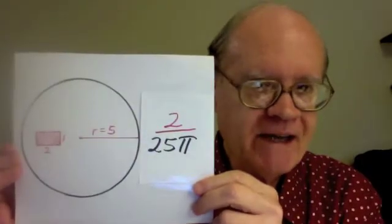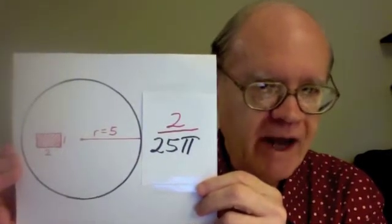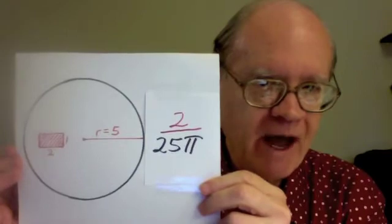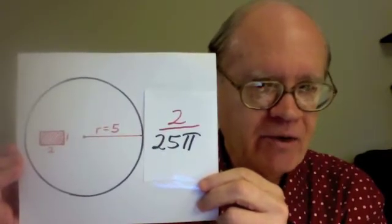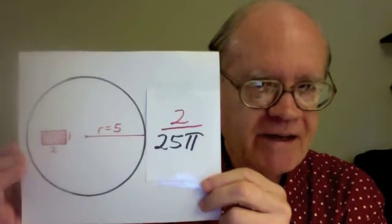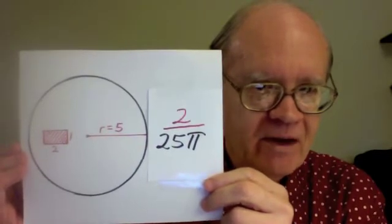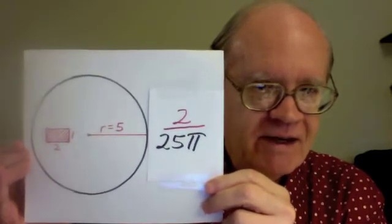And so our probability answer is 2 over 25 pi. That is the exact answer. We could get a decimal approximation from a calculator, but I'm not interested in that in this challenge. What I want is the exact answer. So that's a sample problem.